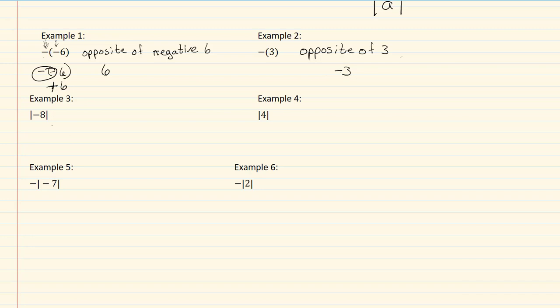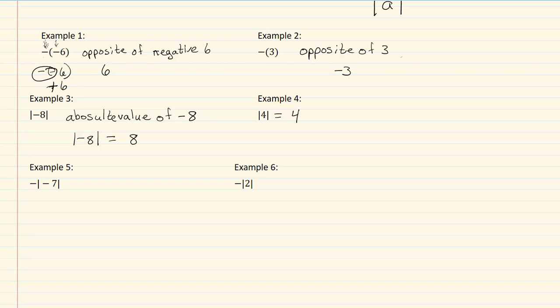In example three, we have the absolute value of negative eight. An absolute value is always positive, so this means that the absolute value of negative eight equals eight. In example four, we have the absolute value of four, and the absolute value of four will be four, since absolute values are always positive.